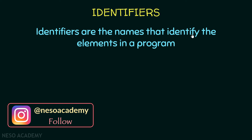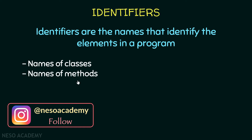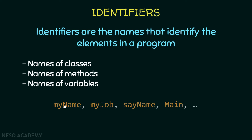We will also see that Java is case sensitive. First of all, what are identifiers? Identifiers are the names that identify the elements in a program — for example, the names of classes, methods, and variables. Have a look over here: myName, myJob, sayName, and main are all identifiers.